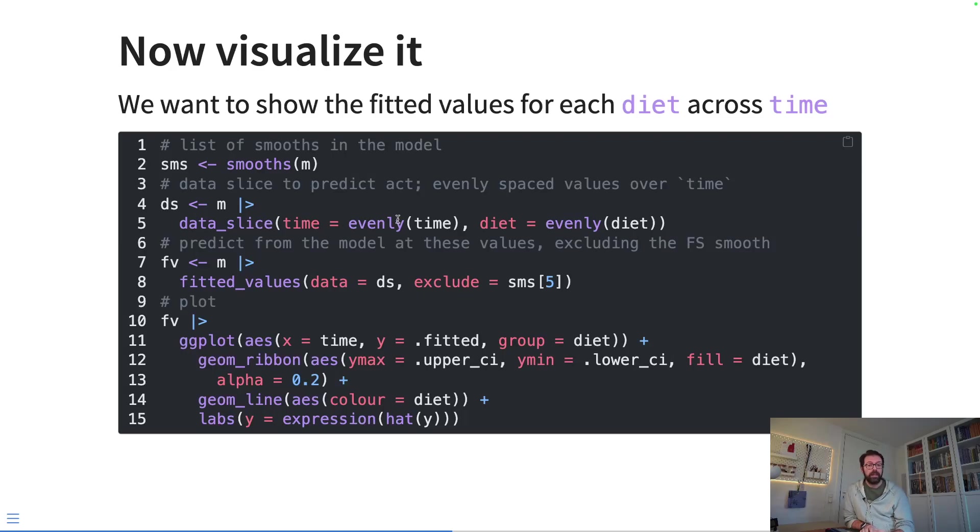We need to exclude that variability, so we use the smooths function from gratia to get a list of smooths just so that we can refer to them by their name as far as mgcv is concerned. In the next line here, we're creating a data slice where we are getting 100 observations evenly spaced over time, and then we're getting a value evenly spread over the diet. So what that means for a factor is that we're going to get each diet in the prediction data, so we'll have the time values that we're predicting at repeated for each diet. Then we use the fitted_values function in gratia.